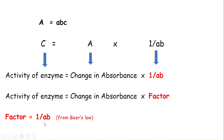So from Beer's law, the factor equals 1/(a·B). The change in absorbance we get from the analyzer, and now we are going to calculate this factor 1/(a·B).